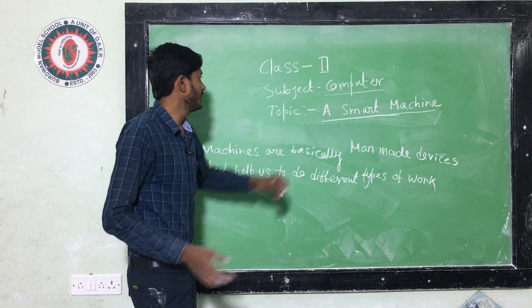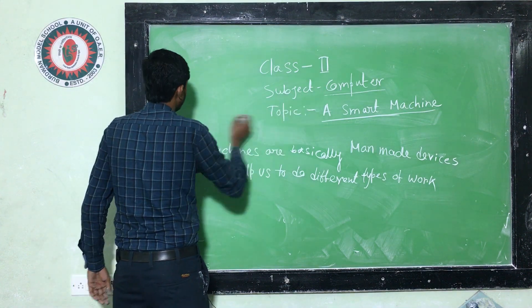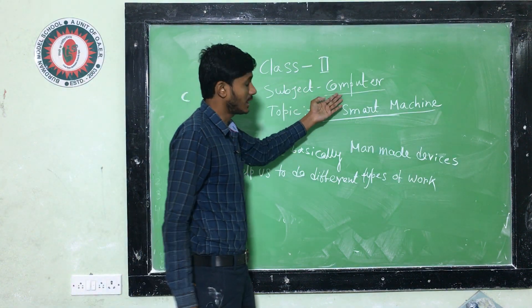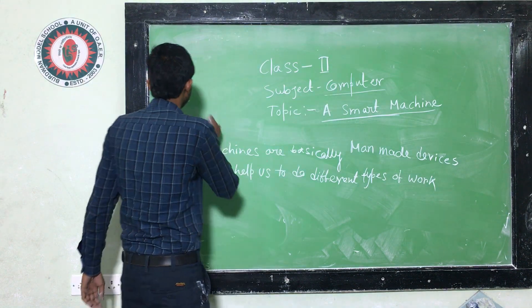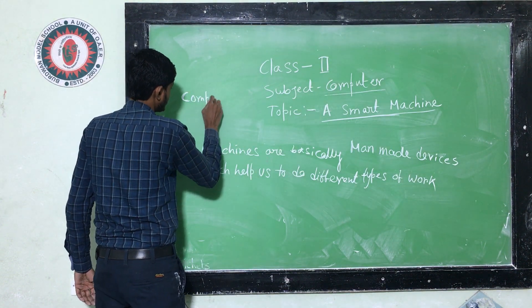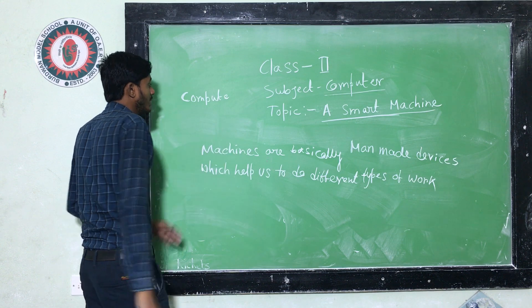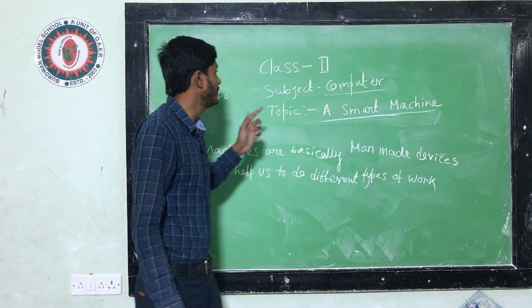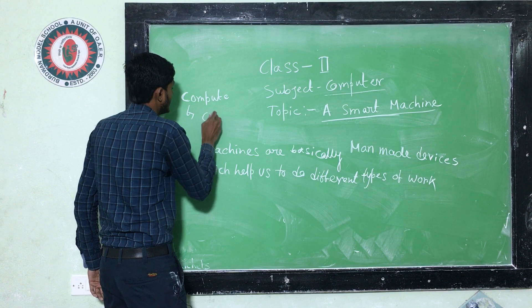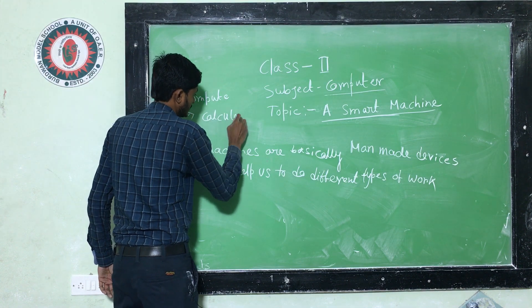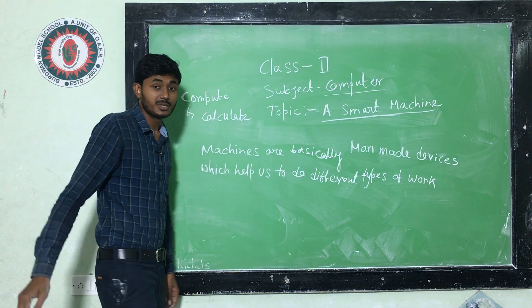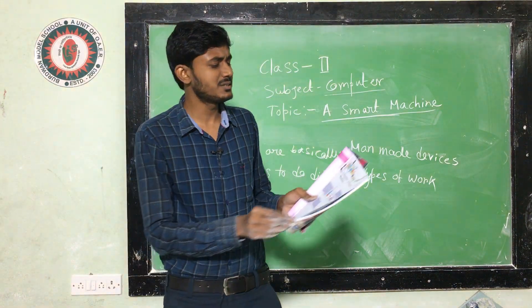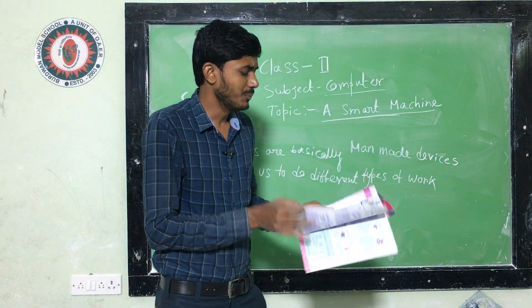The first term is computer. Computer comes from the character C, and computer comes from the word 'compute', which means calculate. In your book, the first chapter is Computer — A Smart Machine.